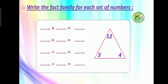Write the fact family for each set of numbers. The fact family — we want to write the relations between the two smallest numbers. It should be that the product equals the larger number.